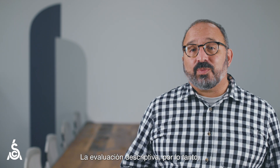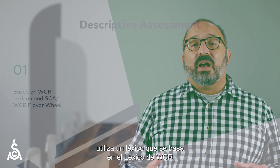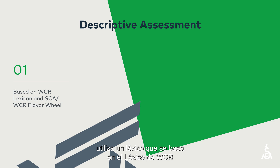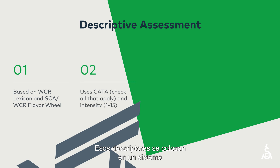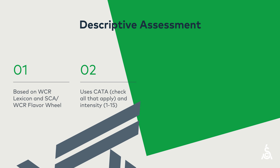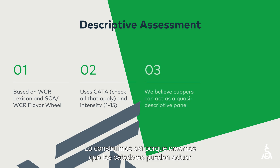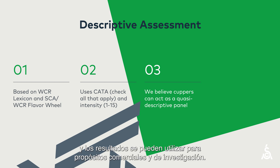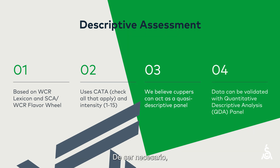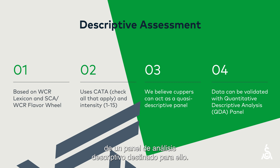The descriptive assessment therefore uses a lexicon based on the WCR lexicon and its associated flavor wheel. It puts those descriptors into a Check All That Apply system, which includes an intensity rating. We constructed it this way because we believe that cuppers can act as a descriptive panel, and the data can be used for both research and trade purposes. If necessary, CVA data can be validated with a dedicated, formal, quantitative descriptive analysis panel.